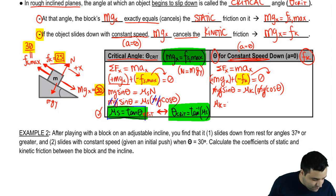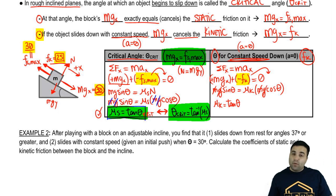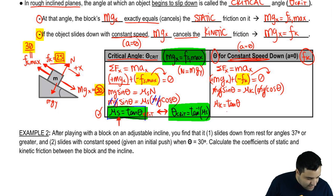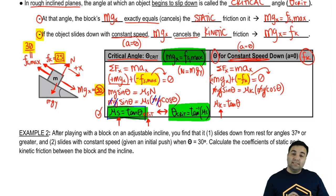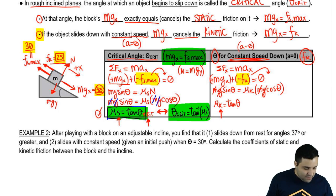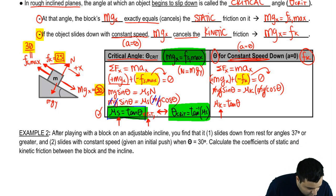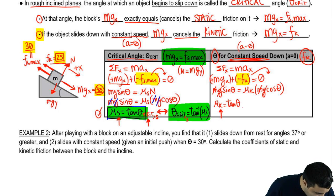You end up with mu-kinetic equals the tangent of theta — the same form of equation, just with kinetic mu instead of static mu. The static version gives the critical angle at which the object wouldn't move at all, and this kinetic version gives the angle at which you achieve constant speed.